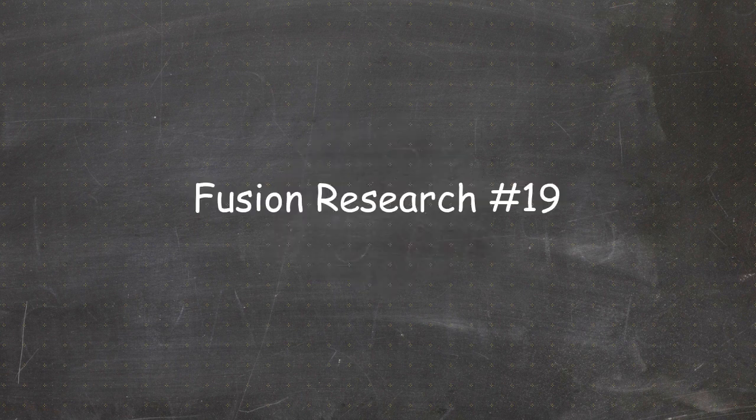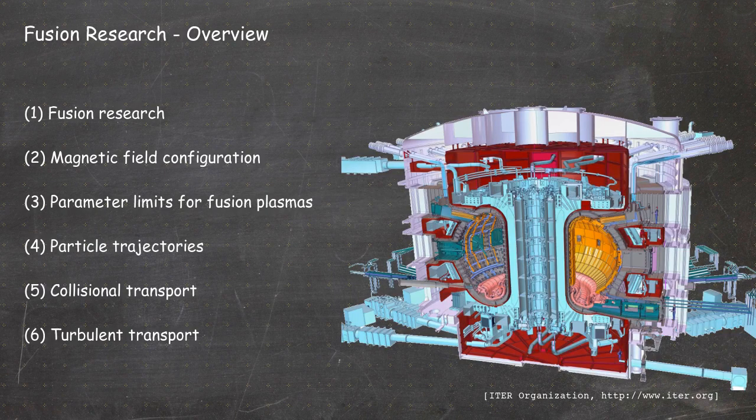Hello everybody and welcome to the free online version of the fusion research lecture. My name is Alf, this is a YouTube channel called Der Plasma and we are in video number 19. We are in chapter 3, parameter limits for fusion plasmas. In the last video we talked about the stability beta limit arising from ballooning instabilities. In this video we will talk about an additional limit — an additional density limit.